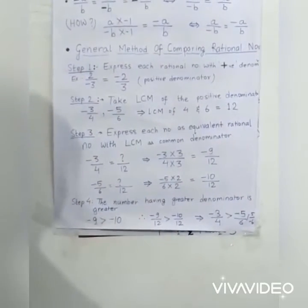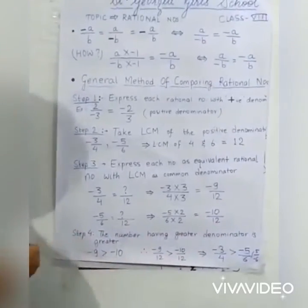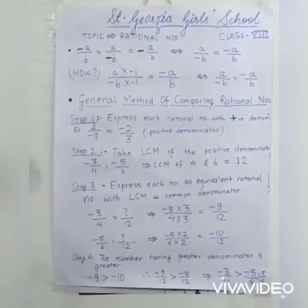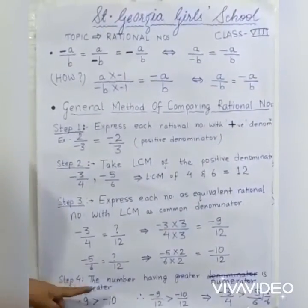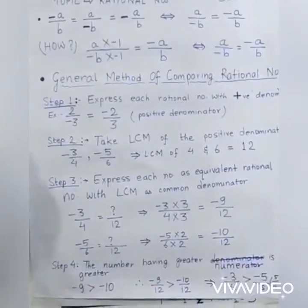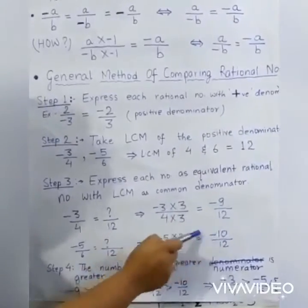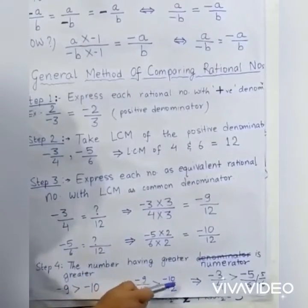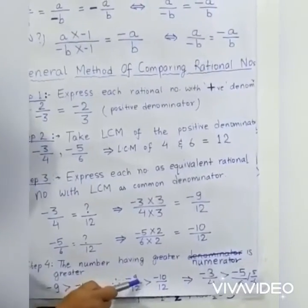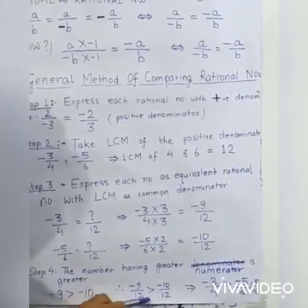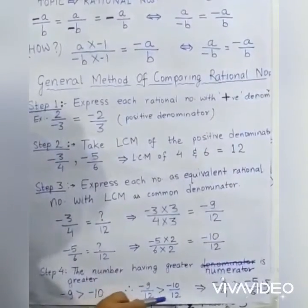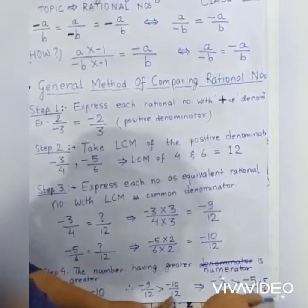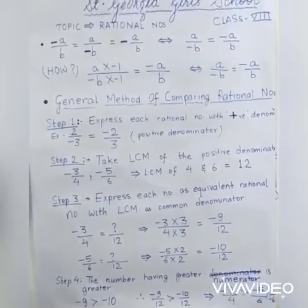Step 4: compare the numerators — the number with the greater numerator is greater. The first numerator is minus 9, the second is minus 10. Since minus 9 is greater than minus 10, minus 9 by 12 is greater than minus 10 by 12. Since both have the same denominator, we conclude that minus 3 by 4 is greater than minus 5 by 6.